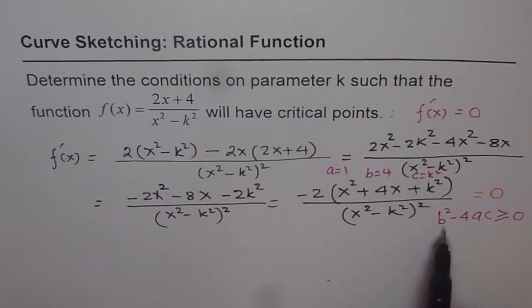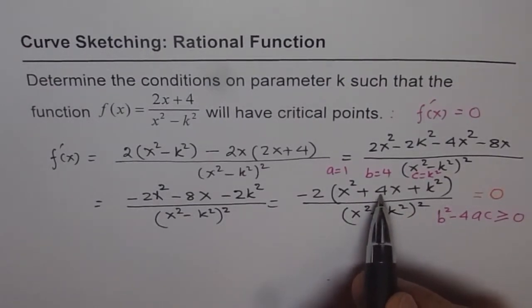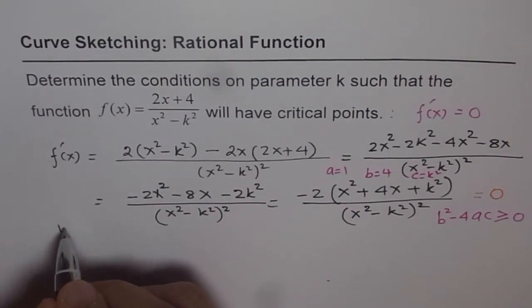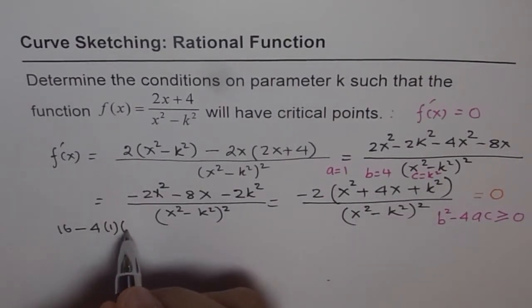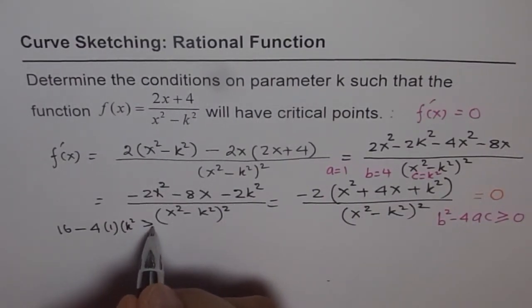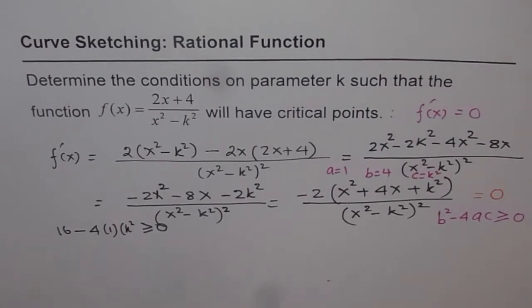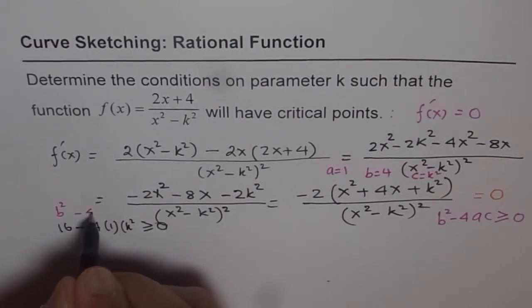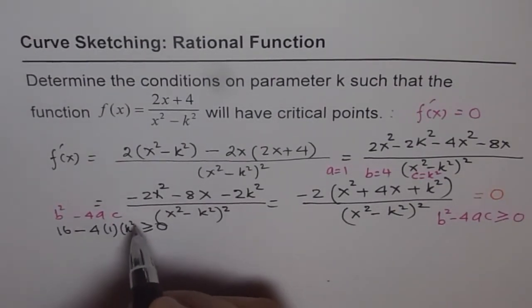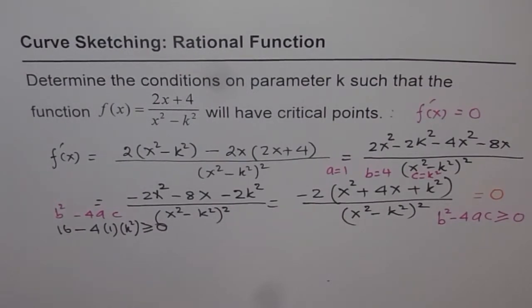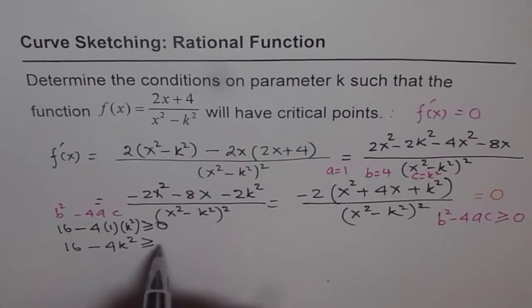Let us check the condition: when is b² - 4ac ≥ 0? b is 4, so 4² = 16. So we write 16 - 4 × 1 × k² ≥ 0. That is our b² - 4ac. So that means 16 - 4k² should be greater than or equal to 0. That is the inequality which we need to solve.